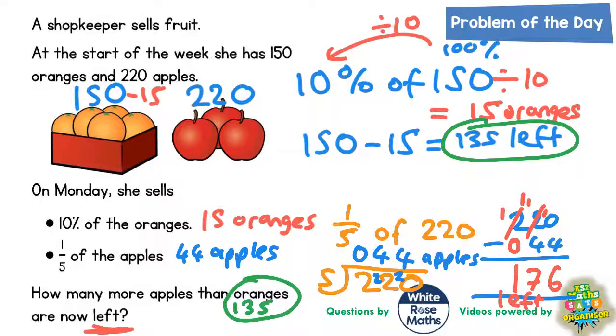And how many apples she's got left is 176 apples. So the question is, how many more is 176 apples than 135 oranges?